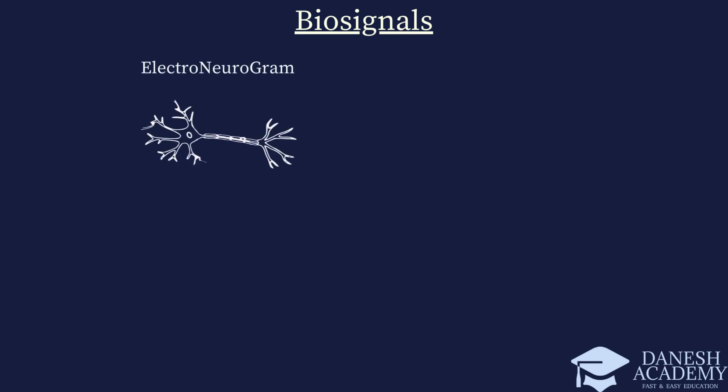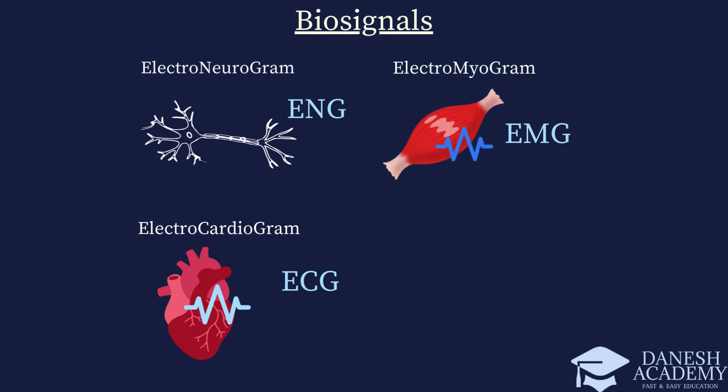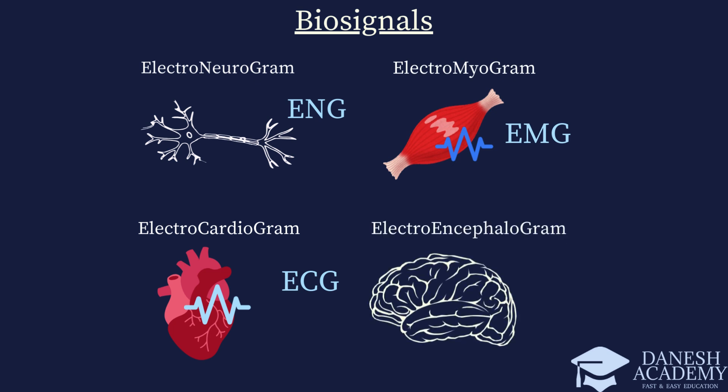Some examples of famous biosignals are: electroneurogram (ENG), which are signals obtained from a nerve; electrocardiogram (ECG), signals obtained from the heart; electromyogram (EMG), signals obtained from a muscle; and electroencephalogram (EEG), signals obtained from the brain.